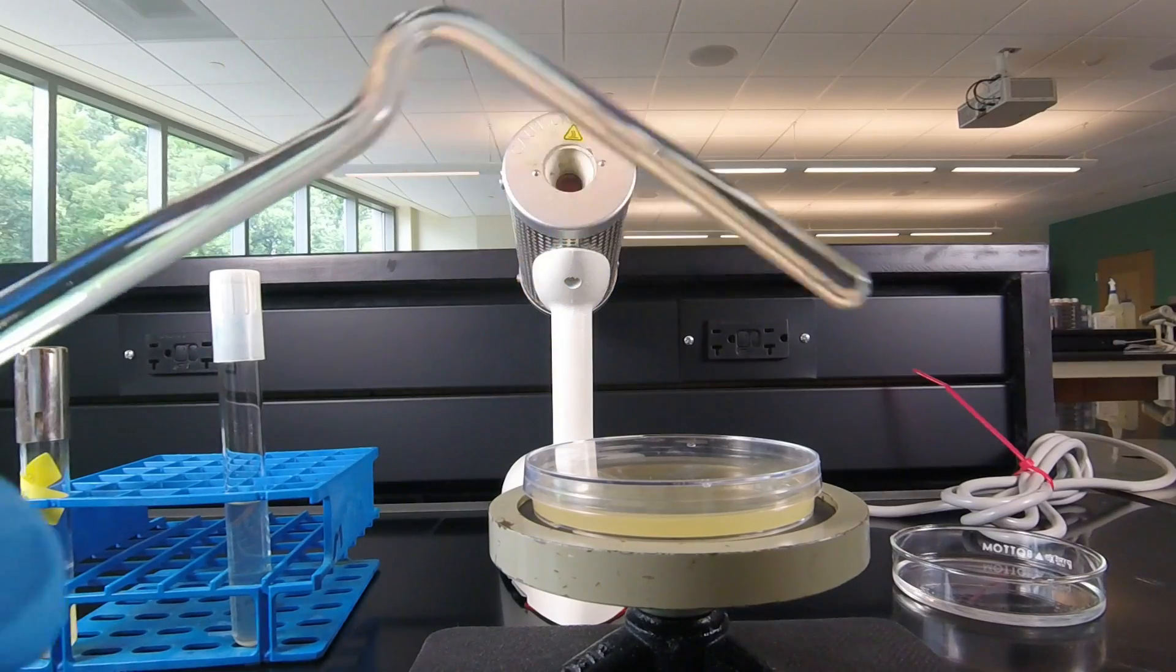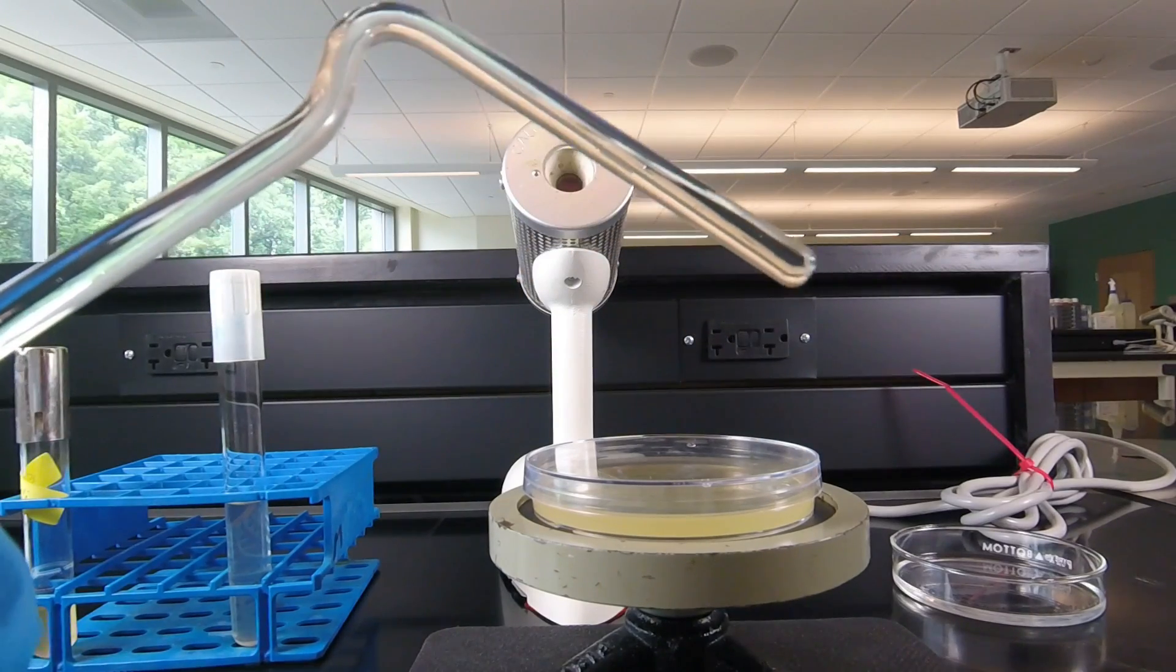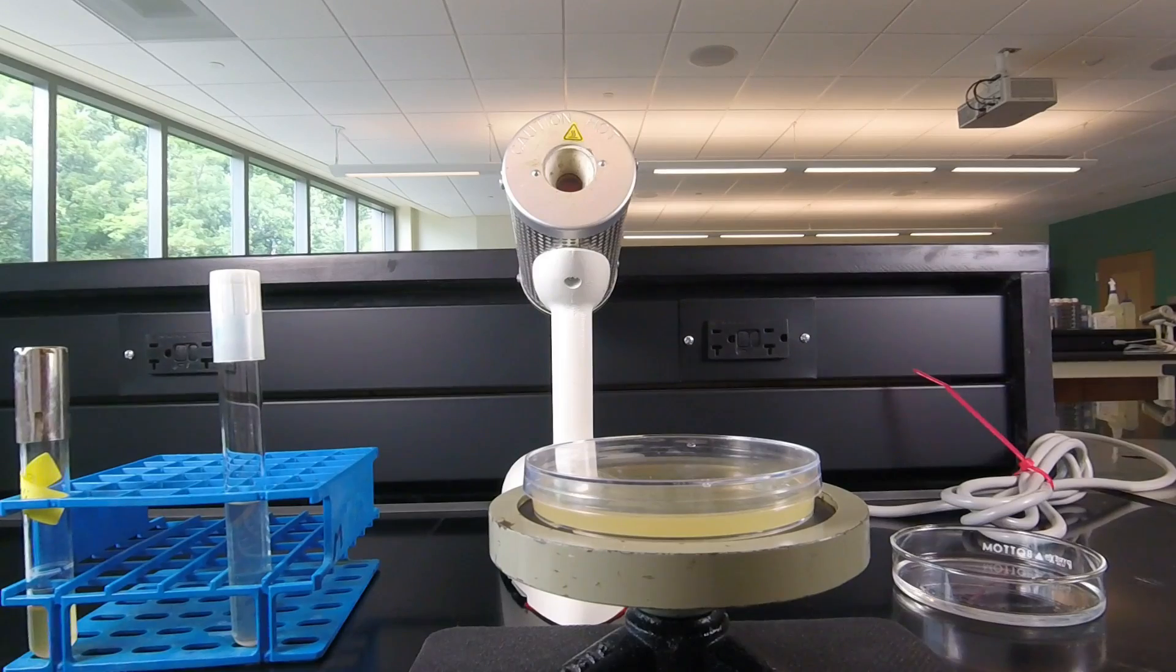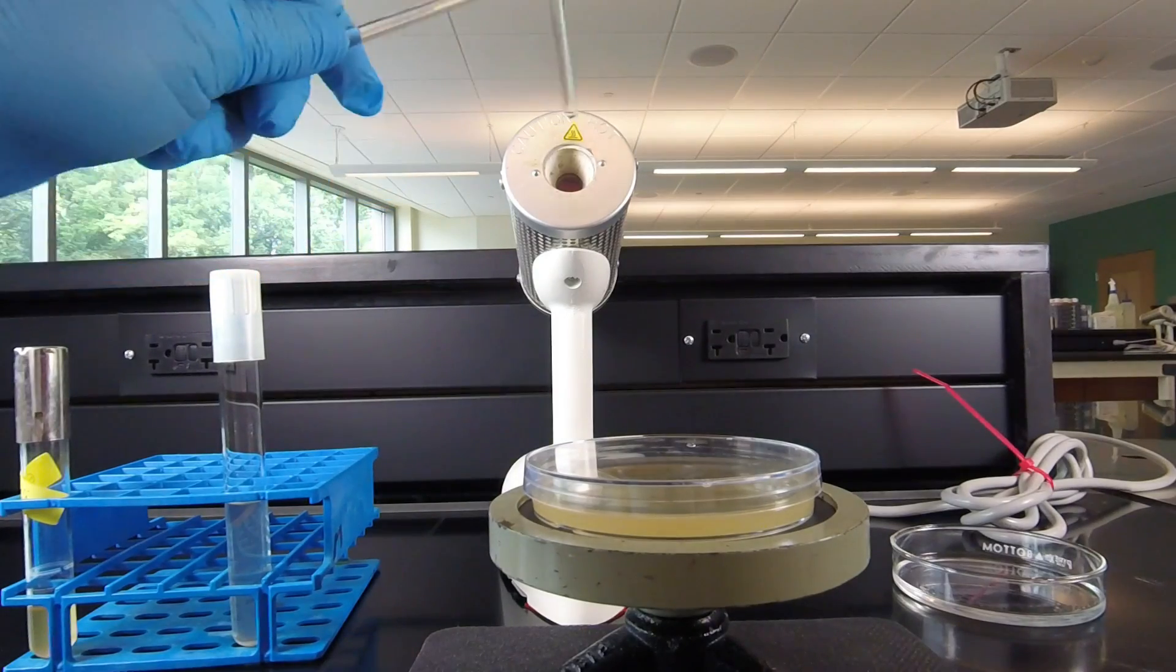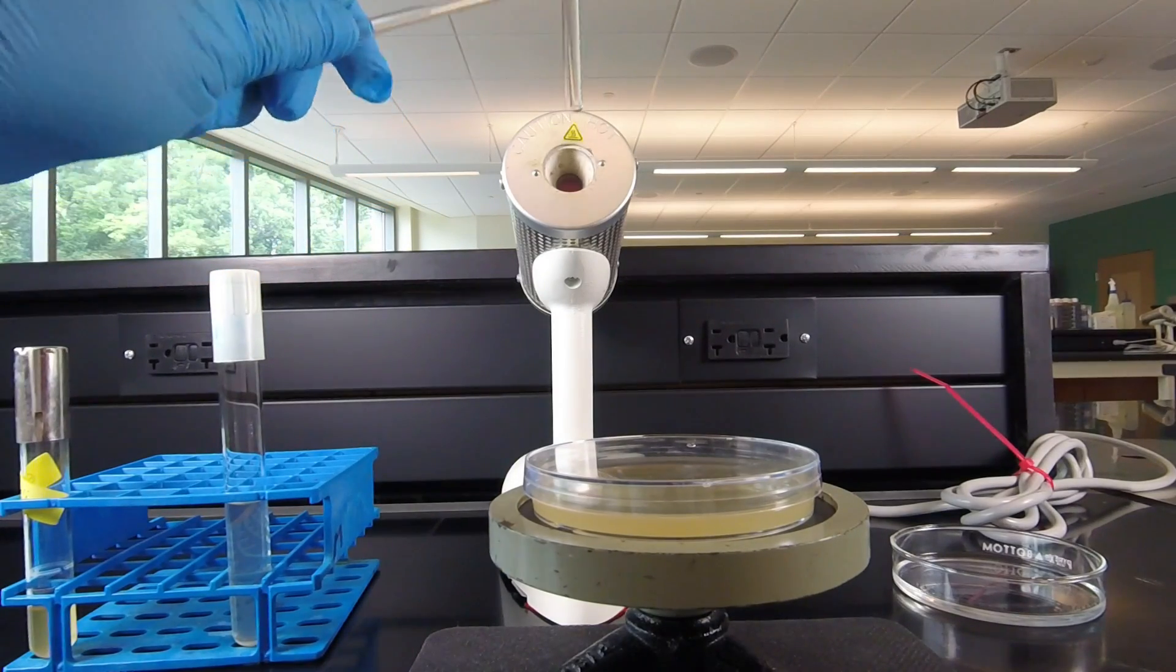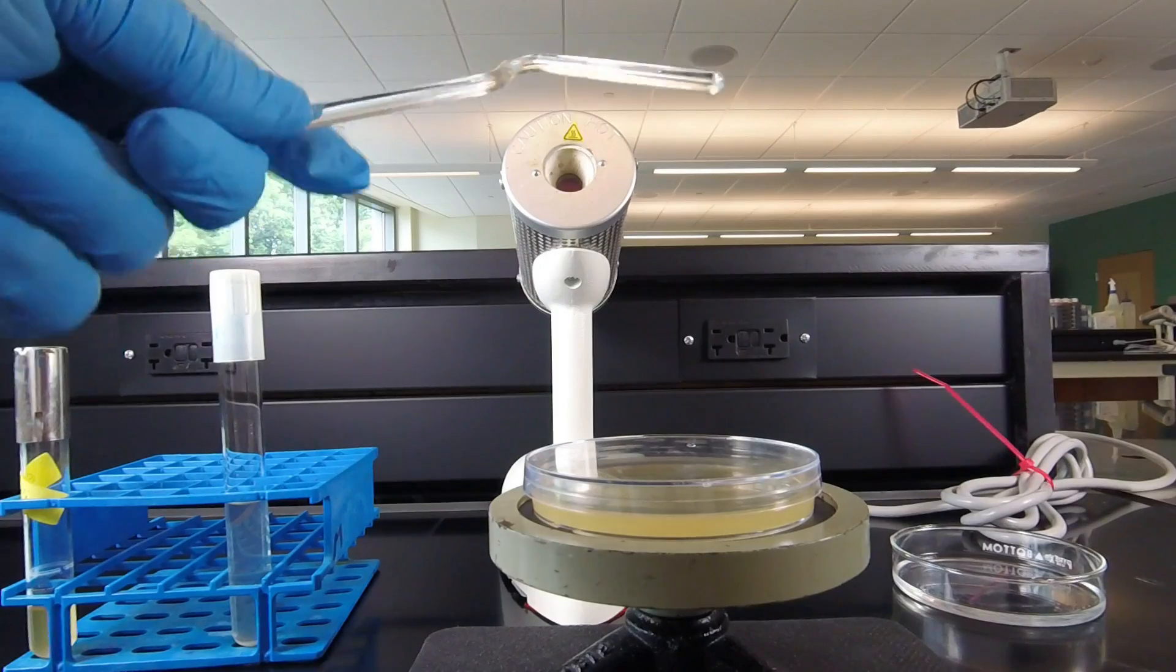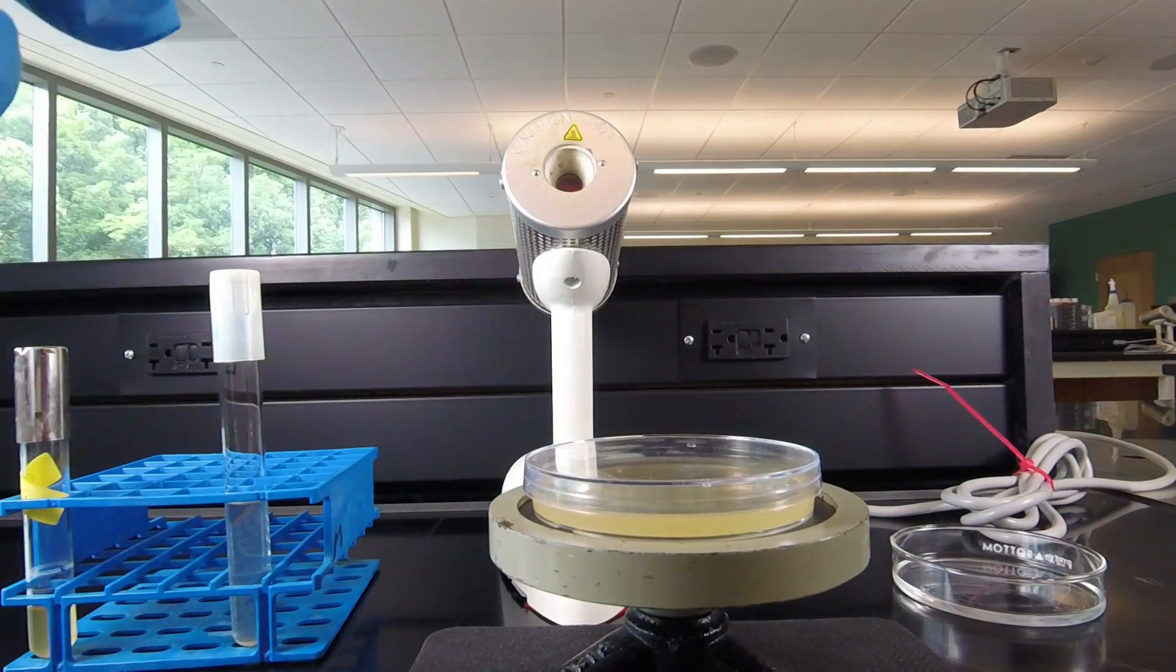Now as I mentioned to do this we're going to use a bent glass rod but of course the glass rod is contaminated since it's been sitting on the bench top. So what we're going to do to sterilize it is not use the Bacto incinerator because that would heat the glass and glass holds the heat and that would kill the bacteria when we tried to spread them.